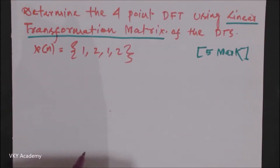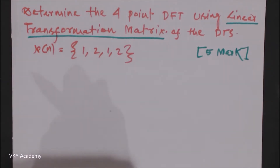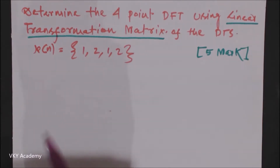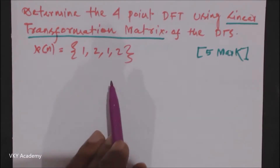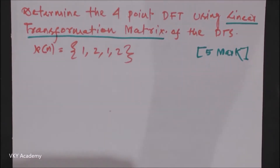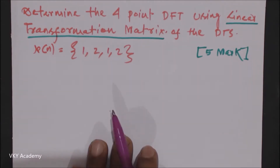Hello everyone. In the previous two lectures we have discussed about DFT as linear transformation. In this lecture, we will solve one numerical and we will determine the DFT of a discrete time sequence x(n) = {1, 2, 1, 2} using the linear transformation matrix. The same question was solved in lecture number 2 using the conventional method, and today we will determine the DFT using the linear transformation matrix. This is also a frequently asked question for the semester examination.